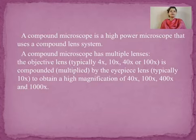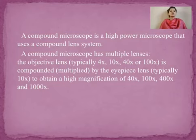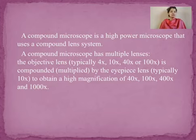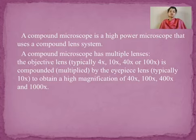A compound microscope is a high resolution microscope that uses a complex lens system. It is also termed a high power microscope which achieves higher levels of magnification than a simple microscope. It is used to view smaller objects such as cell structures and the structure of different tissues in the human body. The compound microscope has two types of lenses: the objective lens and the eyepiece lens.